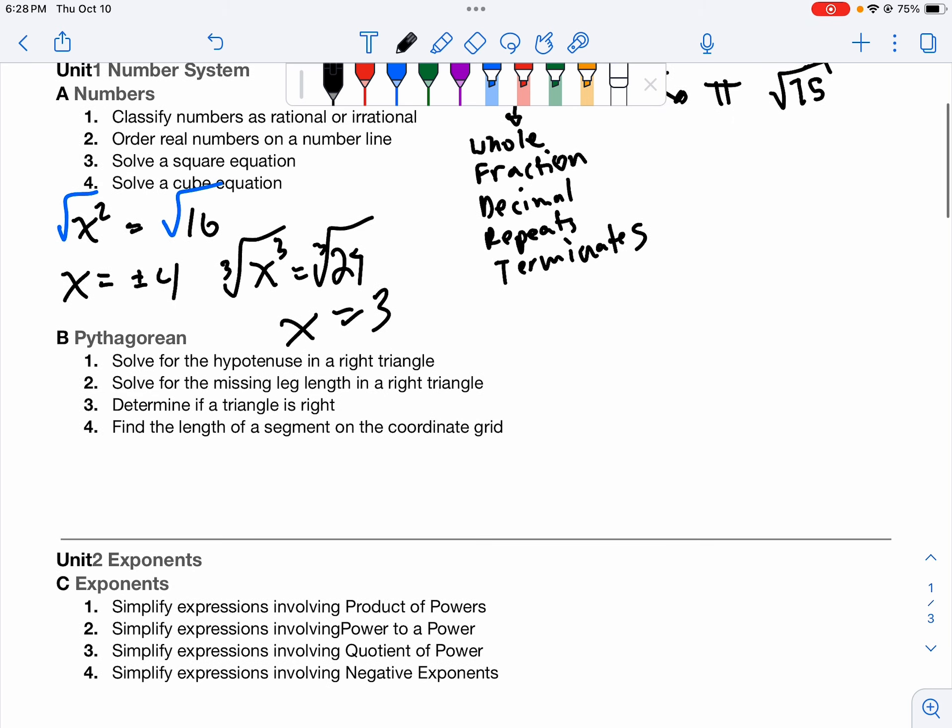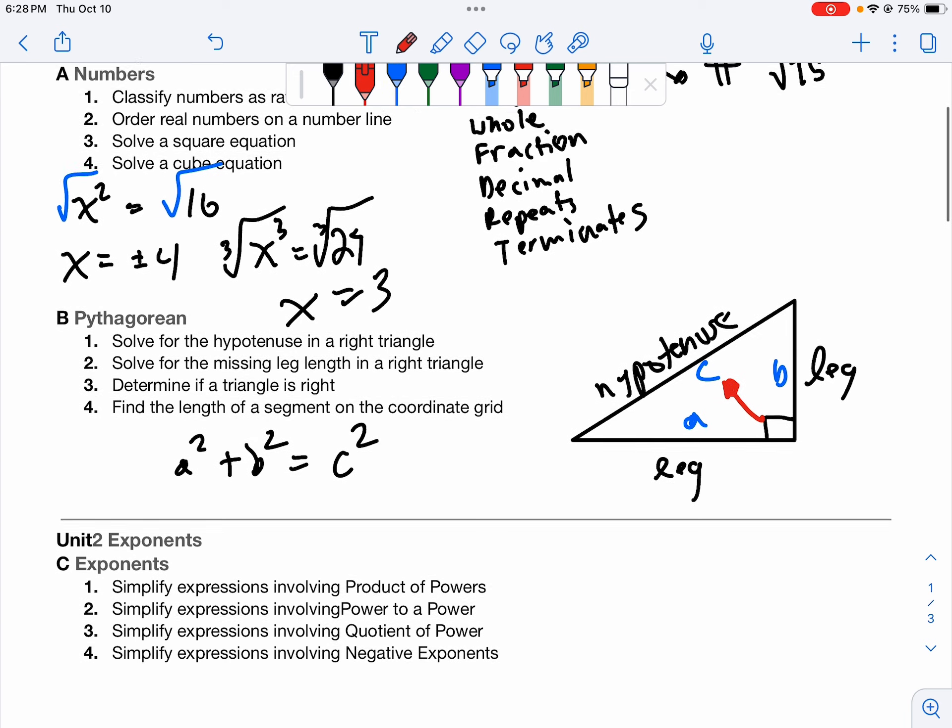The other thing we had was the cube root. So we might have the cube of x equals 27. And then we would cube root both sides. We also learned about the Pythagorean theorem. If we have any right triangle, there's the right angle. This is the leg. This is the other leg. This is the hypotenuse. What we know is that a squared plus b squared equals c squared, where our legs are a and b and our hypotenuse is c.